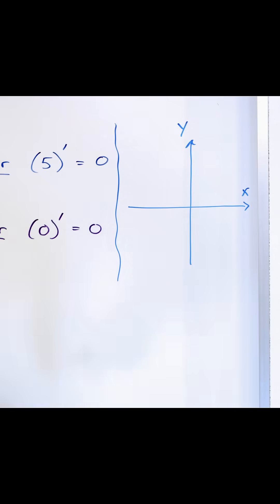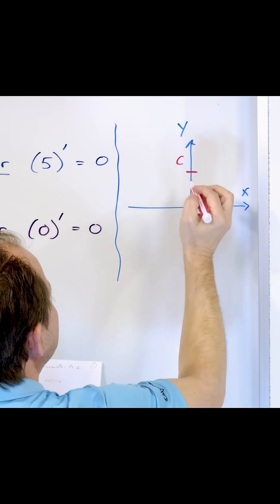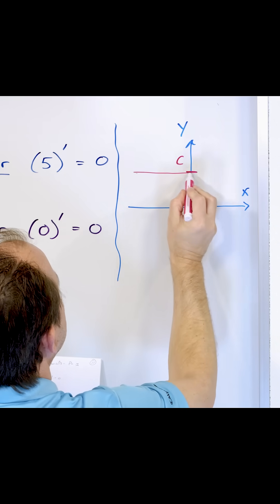So if I do a little graph right here, let's say f of x was equal to, I don't know, 3. But I'm going to label it c because I don't know exactly what the number could be.